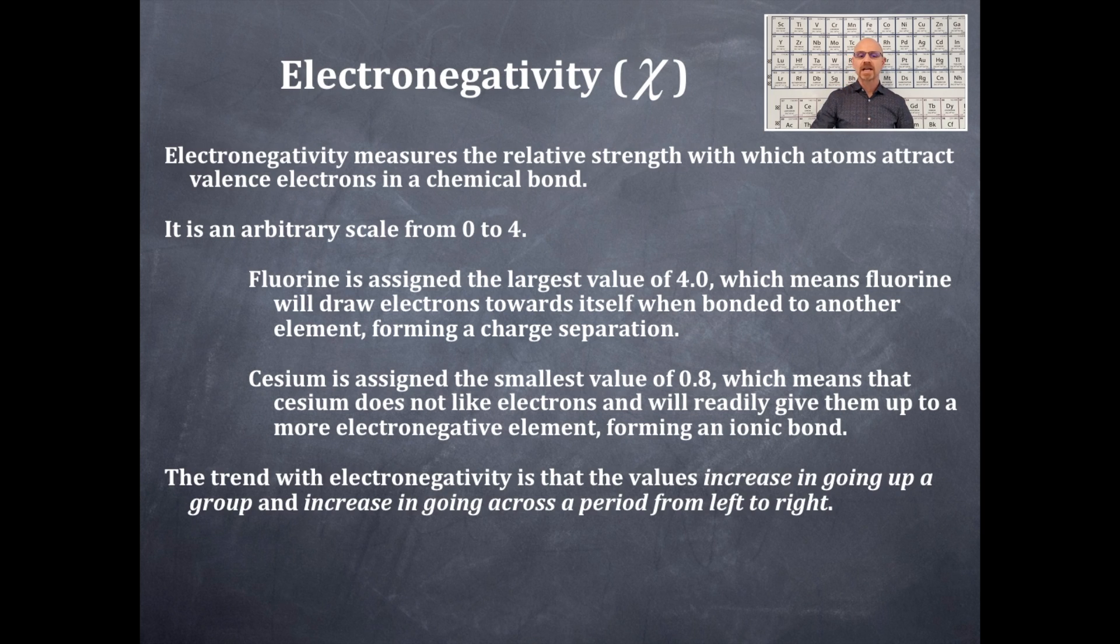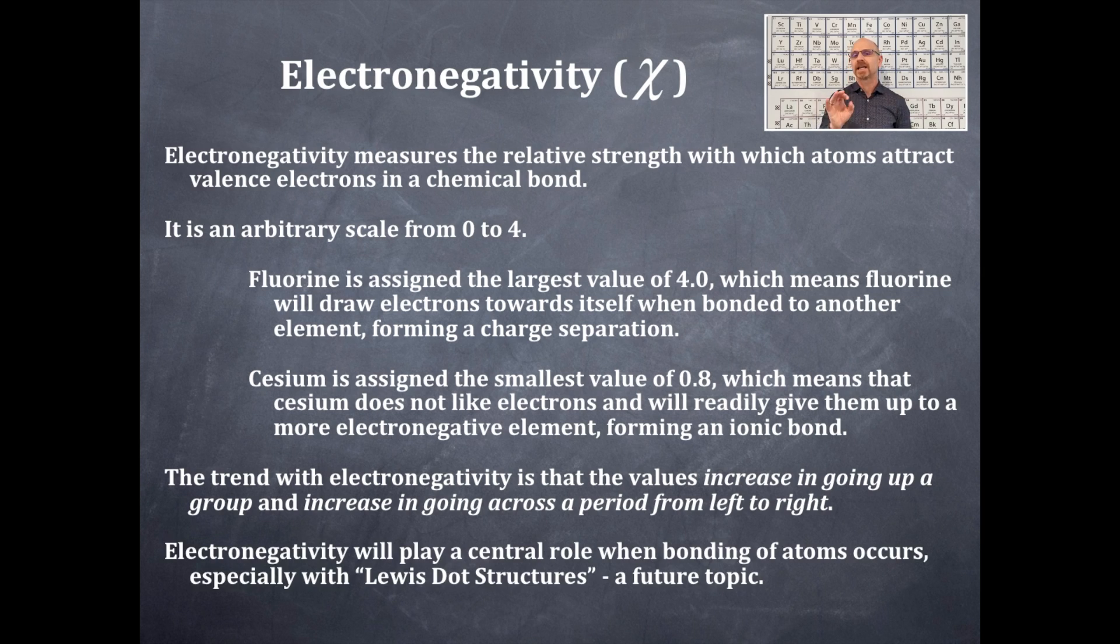The trend with electronegativity is the following: the values increase in going up a group and increase in going across a period from left to right. Electronegativity will play a central role when bonding of atoms occur, especially with Lewis dot structures.